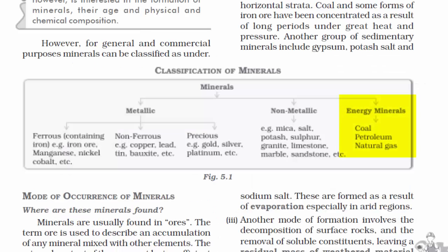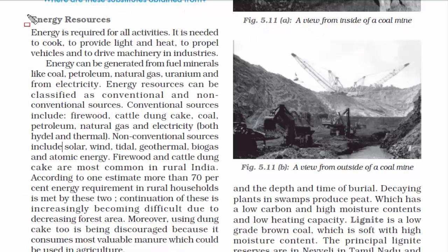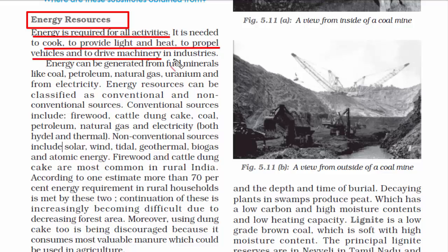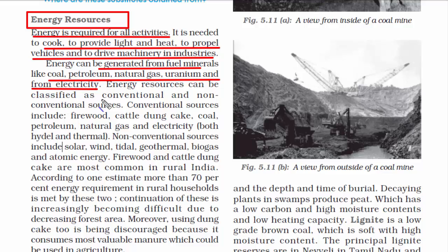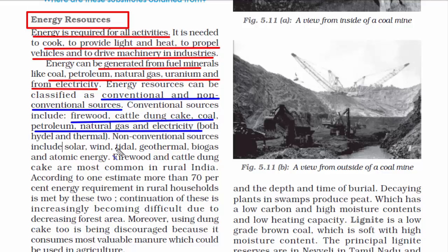Now it's time to read about the second part of this chapter: energy resources. Energy is required for all activities — to cook, to provide light and heat, to move vehicles and drive machinery and industries. The most common method of generating energy is through fuel like coal, petroleum, natural gas, uranium, and from electricity. Energy resources can be classified as conventional and non-conventional sources. Conventional sources are those used for a long time — firewood, cow dung cake, coal, petroleum, natural gas, and electricity.